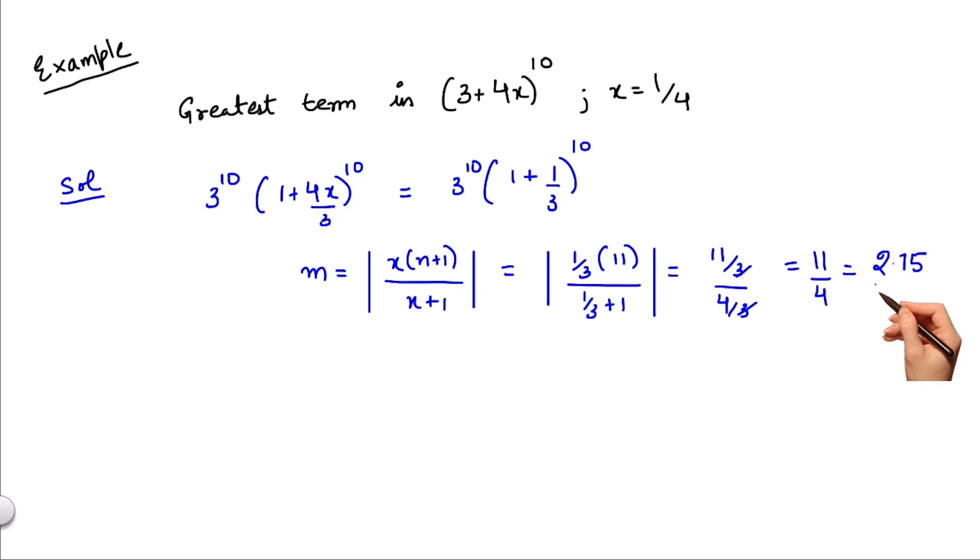Since this is not an integer, hence the greatest term would be greatest integer of (m+1) term which is (2+1) which is the third term.